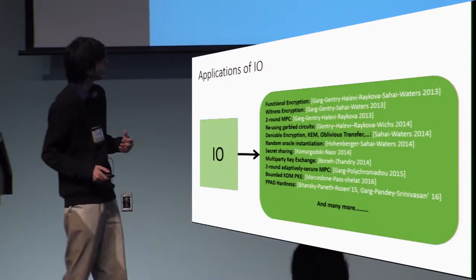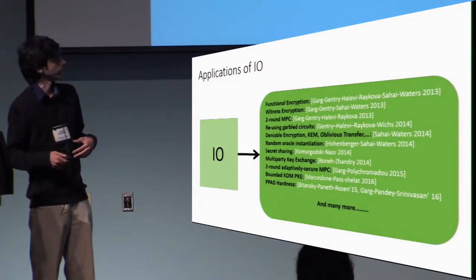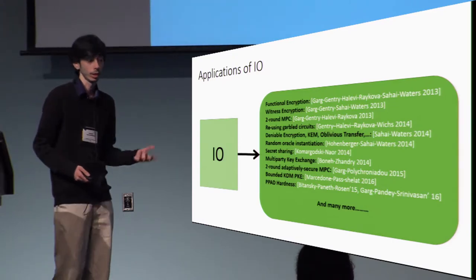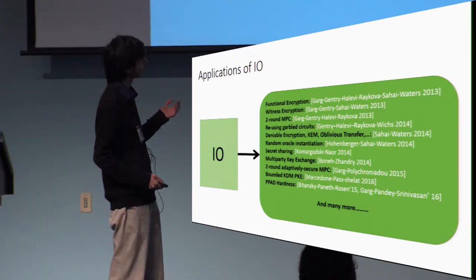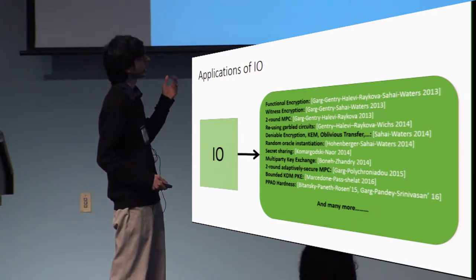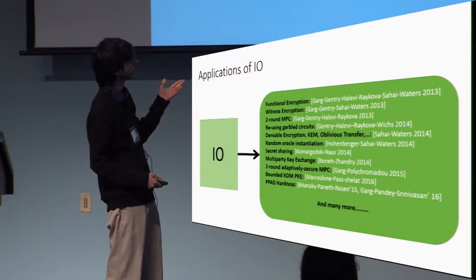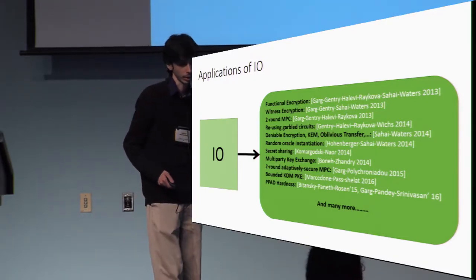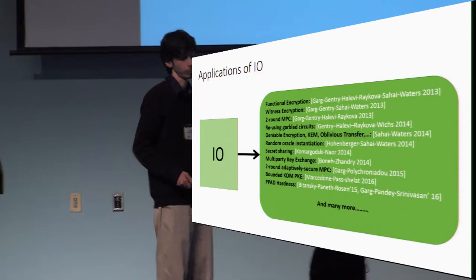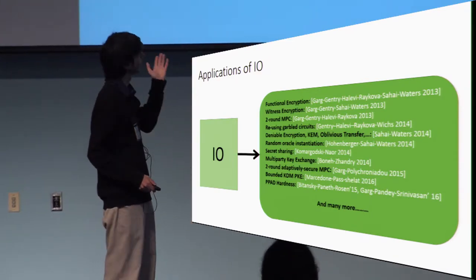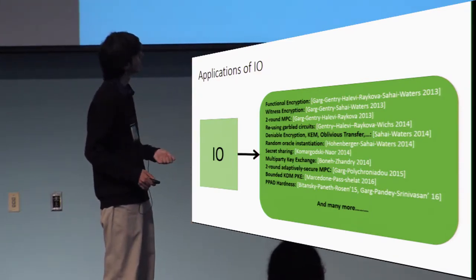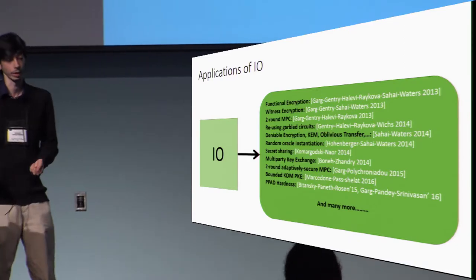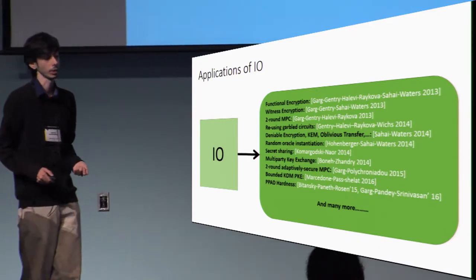Following the first candidate construction of Garg et al. in 2013, I.O. has shown to be quite a powerful primitive, allowing many applications to be built upon it, including functional encryption, two-round multi-party computation, and even proving the hardness of complexity results. And there are many more applications following that.